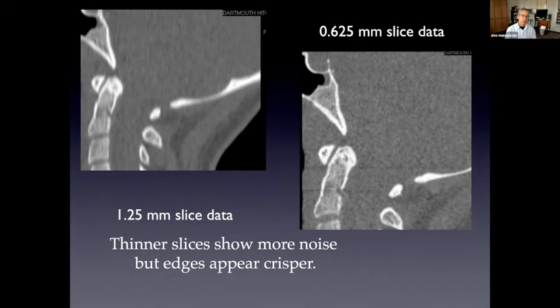This is one of the benefits we have in reconstructions now with helical data. And I would urge you when you're reviewing scans, whenever you have a question, ask the technologist to reconstruct the images at close to the detector thickness. And you should be acquiring your data at thin sections.